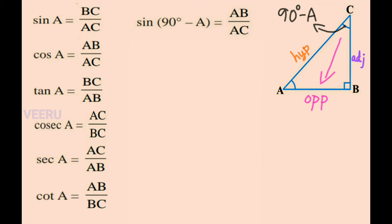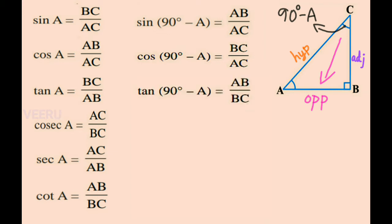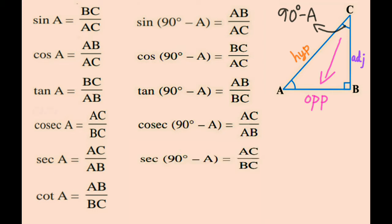Sin(90° − A) is equal to AB by AC. Cos(90° − A) is equal to BC by AC. Tan(90° − A) is equal to AB by BC. Cosec(90° − A) is equal to AC by BC. Sec(90° − A) is equal to AC by BC. And Cot(90° − A) is equal to BC by AB.